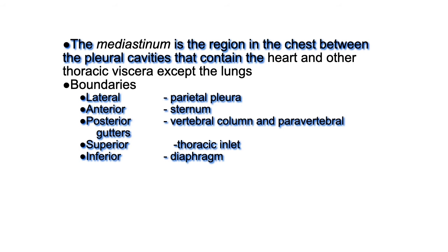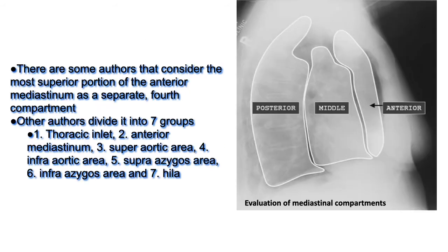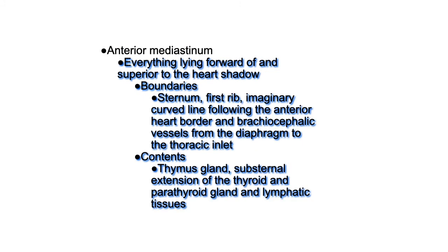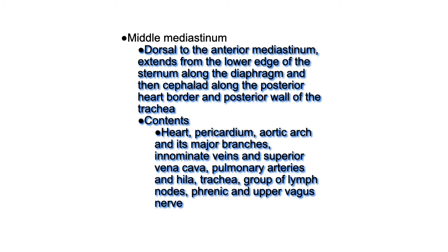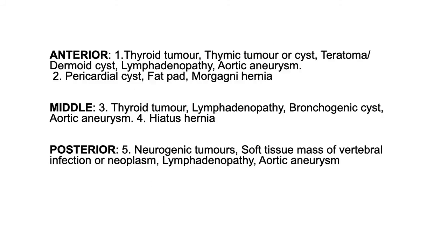The mediastinum is the region in the chest between the pleural cavities that contains the heart and other thoracic viscera except the lungs. Some authors consider the most superior portion of the anterior mediastinum as a separate fourth compartment, and others divide it into seven groups. For our purposes, let's divide it into three easy groups: anterior, middle, and posterior. You need to know the boundaries and contents of the anterior, middle, and posterior mediastinum very well.